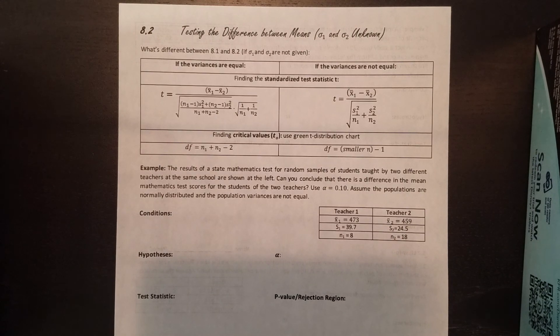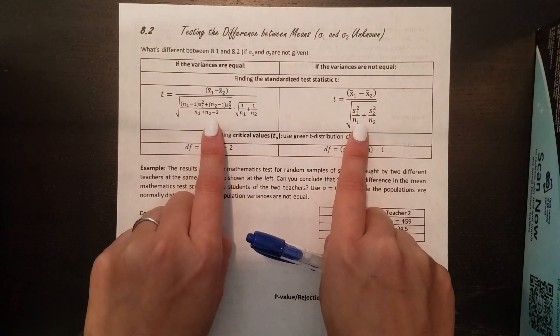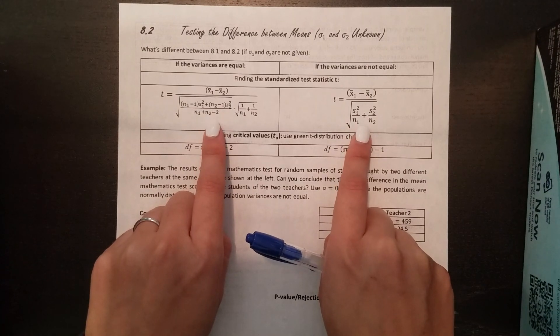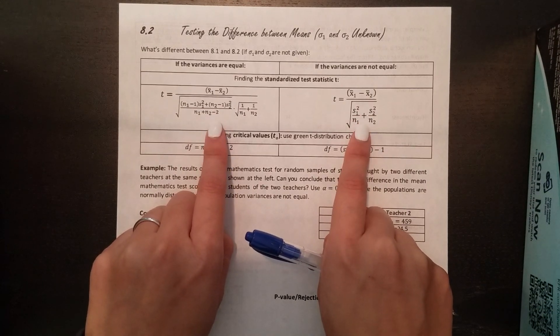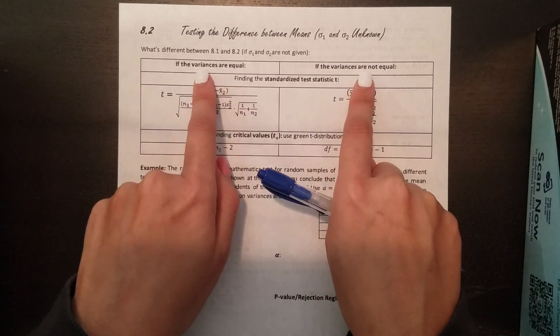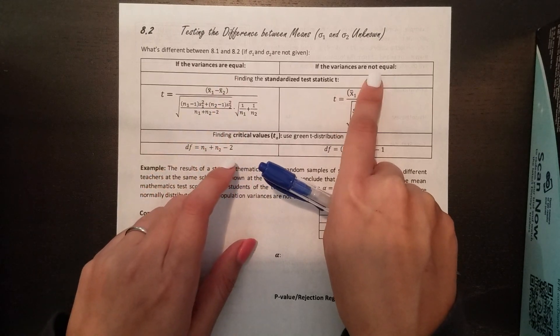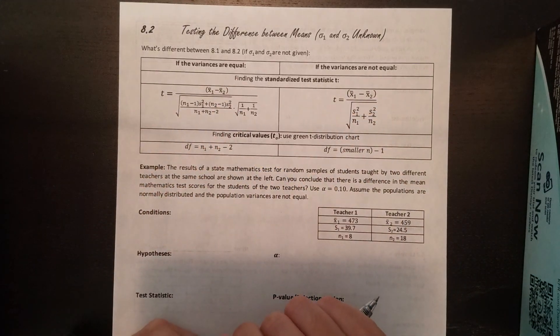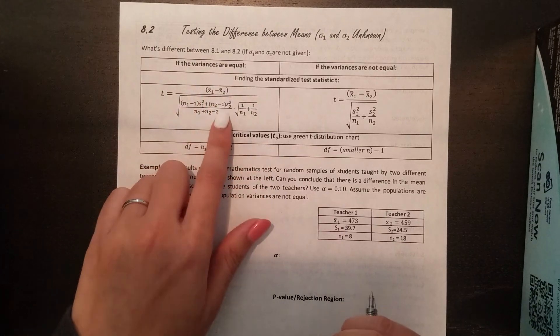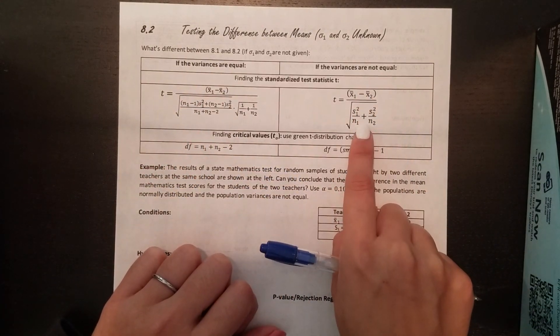If you look to find our test statistic, there's two different situations, so there's two formulas. This one looks a lot crazier than this one. The way that you're going to tell the difference is you're going to look in the problem. It'll tell you either the variances are equal or the variances are not equal. So if the problem says they're equal, you're going to be using this one. If it says they're not equal, you're going to be using this one.